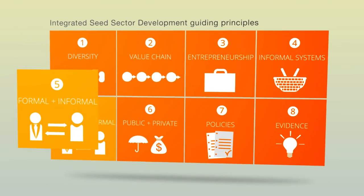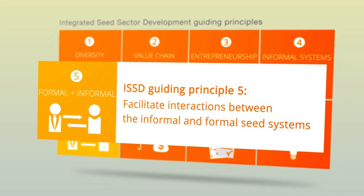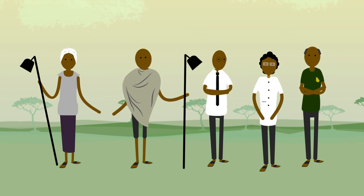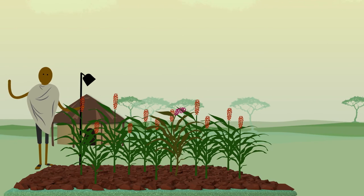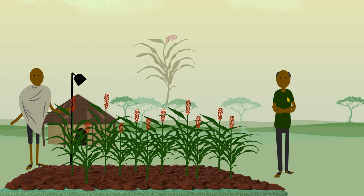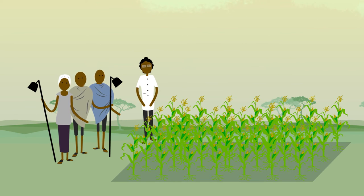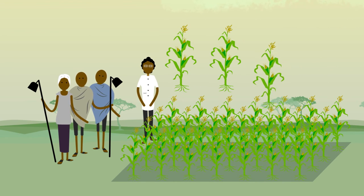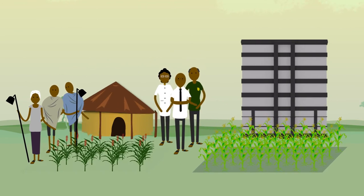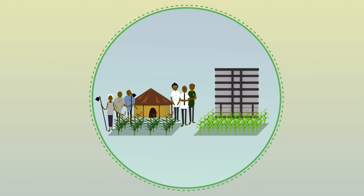ISSD Guiding Principle 5: Facilitate interactions between informal and formal seed systems. Seed sector stakeholders from the different systems can be linked in various ways. Through capacity building on seed quality, for example, formal extension agents can strengthen the informal seed system. Involving farmers in professional breeding programs through participatory variety selection can strengthen the market orientation of these formal programs. ISSD aims to strengthen seed systems by linking informal and formal systems.